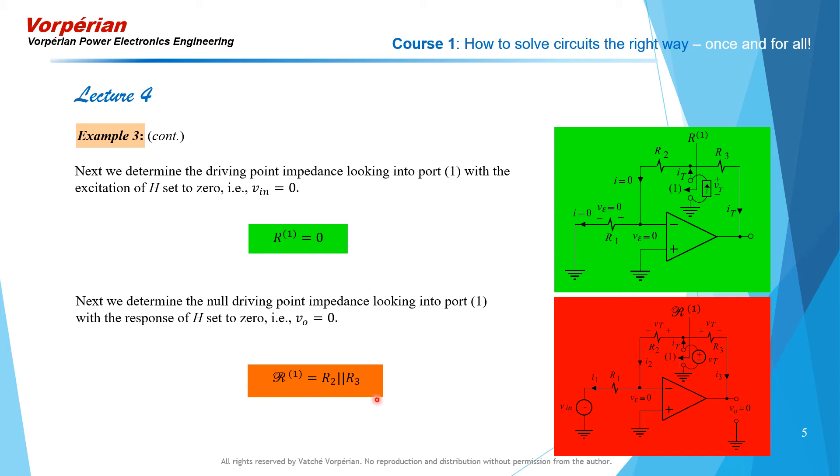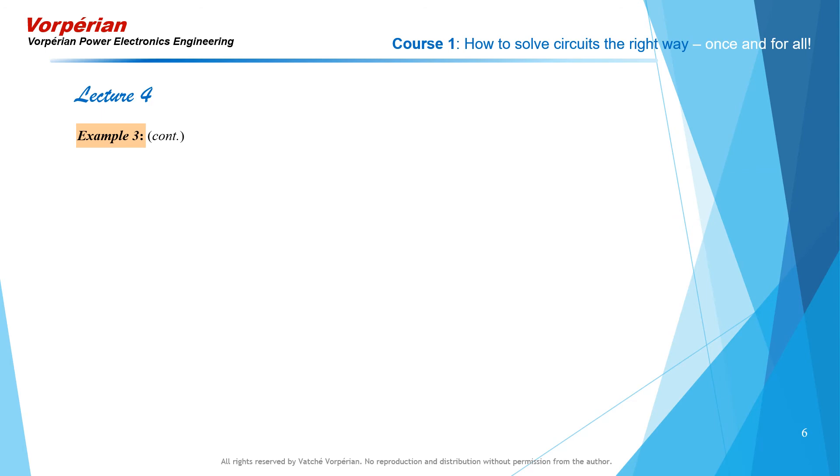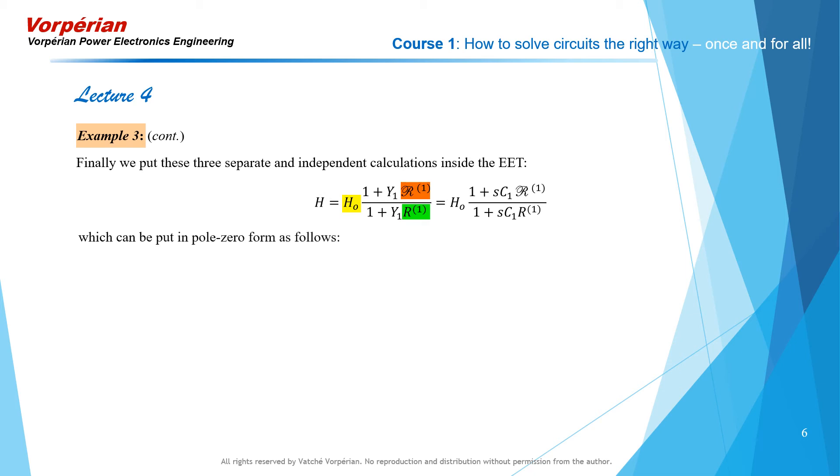So we are done with these three independent calculations, and we substitute these in the extra element theorem. We substitute these three independent calculations in the extra element theorem: H0, script R1, and Roman R1, and we obtain the desired transfer function. And it turns out to be a single zero. It has no pole because we figured out that Roman R1 turned out to be 0.